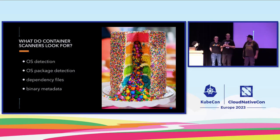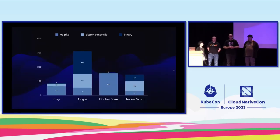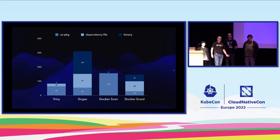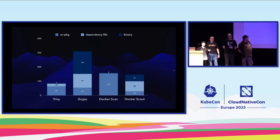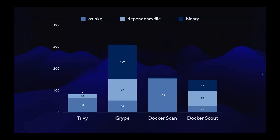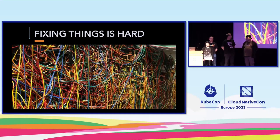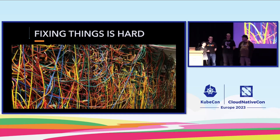Another thing some scanners look for is metadata embedded in binaries. Golang since version 1.17 embeds dependency data inside of the Go binary, and Rust binaries can be scanned in the same way. Now that we've talked about how these tools come up with findings, let's go back and look at our base image results. You can see we've broken them up into three classes of finding: OS package, dependency file, and binary metadata. The numbers found per category for each scanner are wildly different, as well as the total numbers of results.